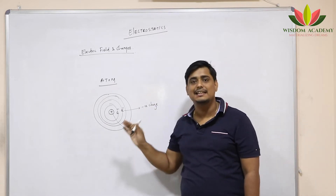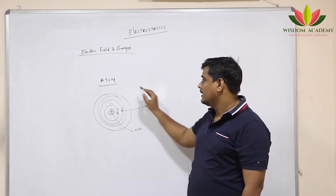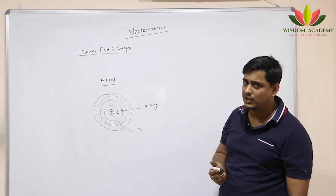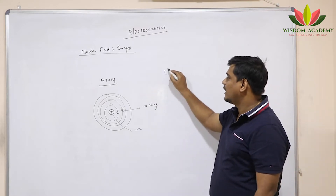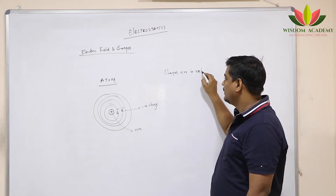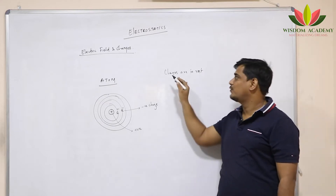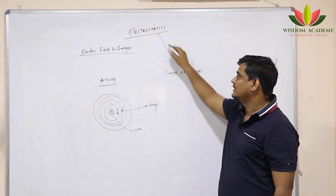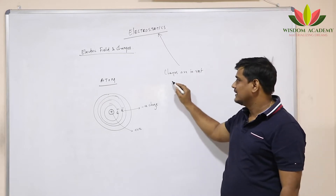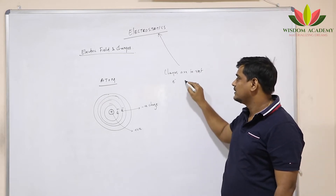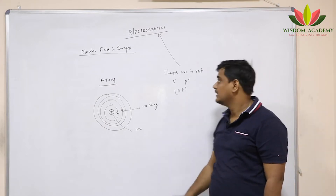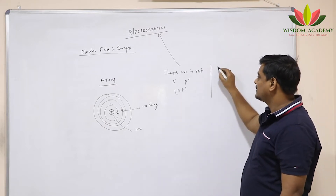These charges can be in two conditions: either they can be at rest or they can be in motion. If the charges are at rest, that means they are not moving, then that branch of physics is known as electrostatics. When the charges are at rest, they produce an electric field, which we will be learning in this chapter.